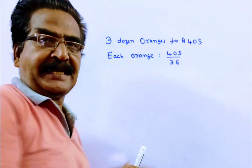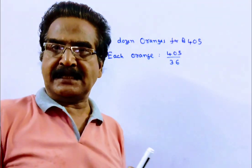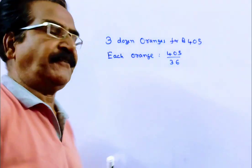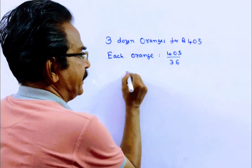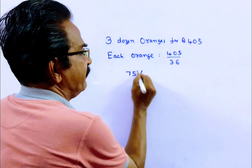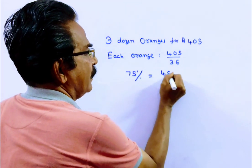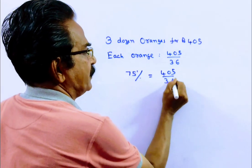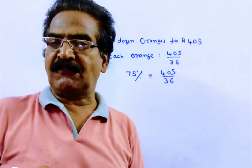by selling at this price, he suffers a loss of 25%. That means this selling price is equal to 75% of the cost price. 75% of the cost price is 405 by 36.